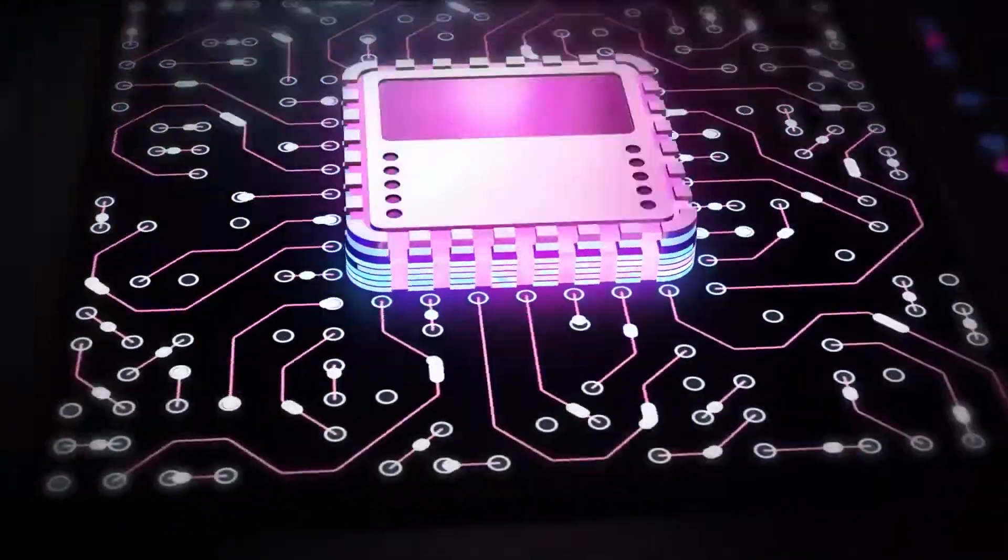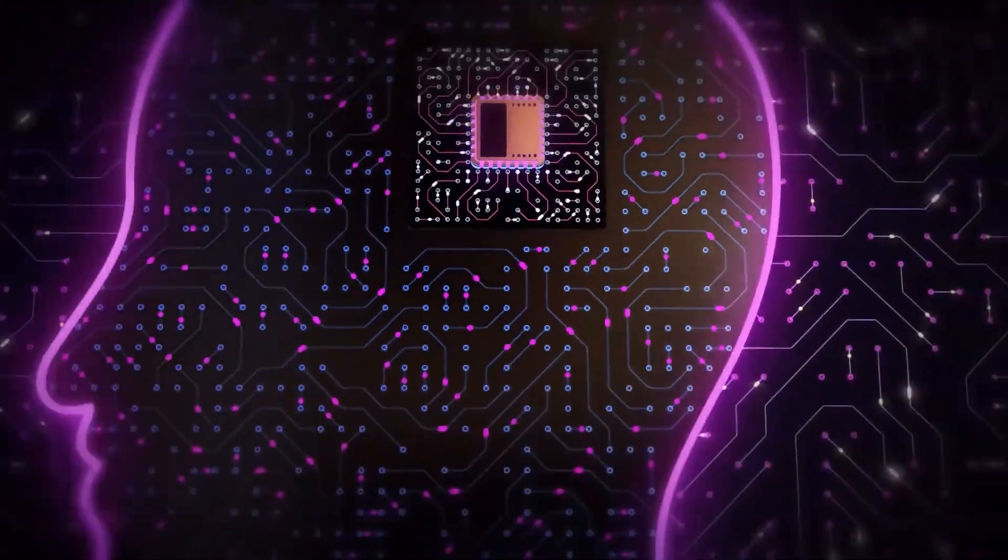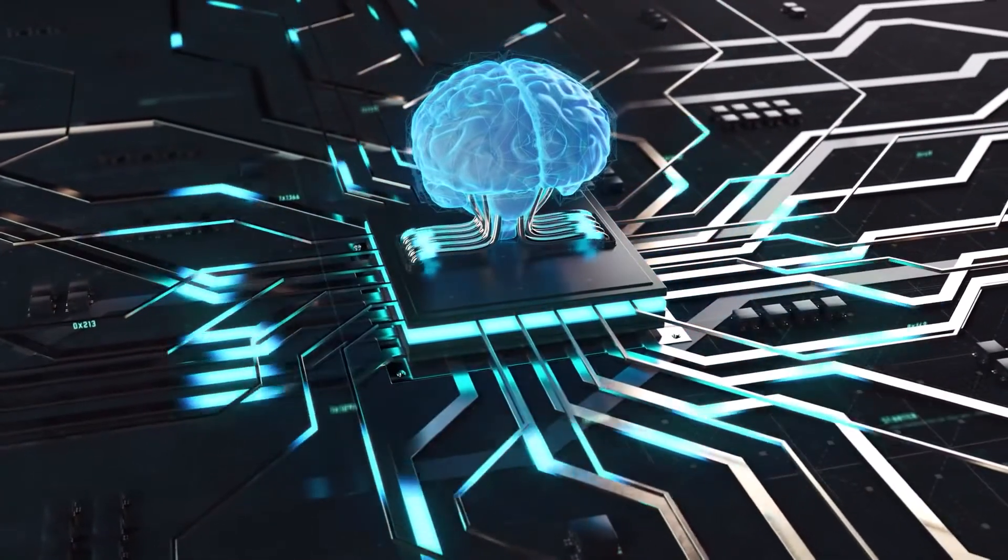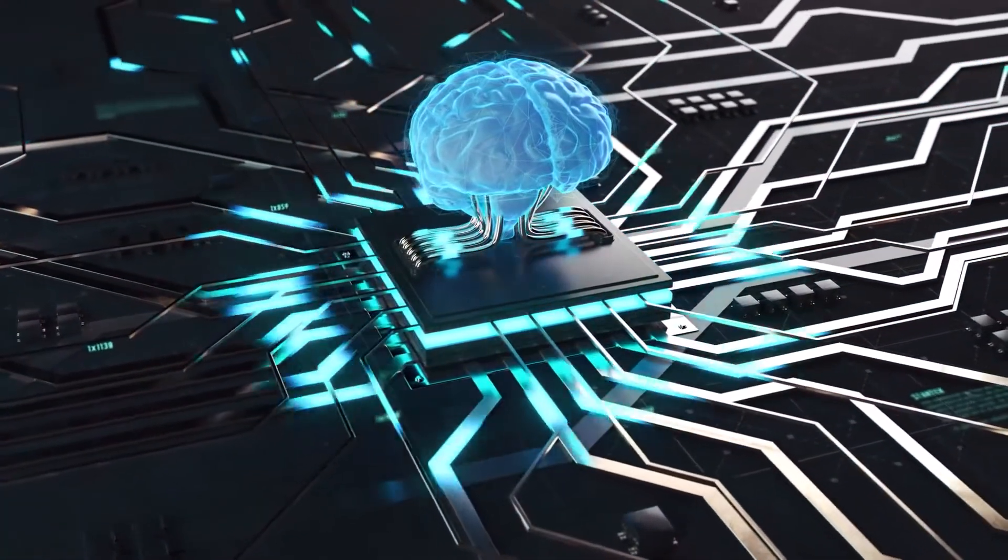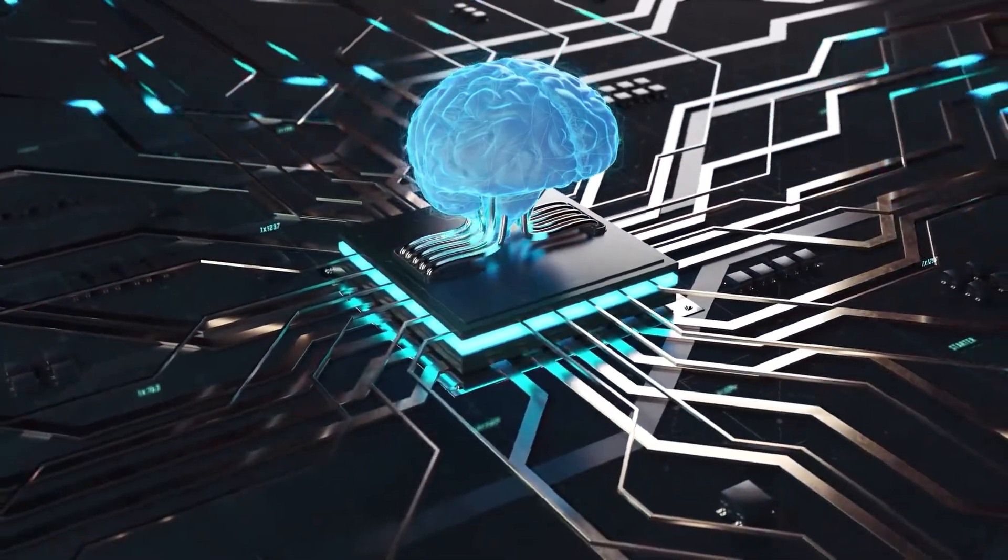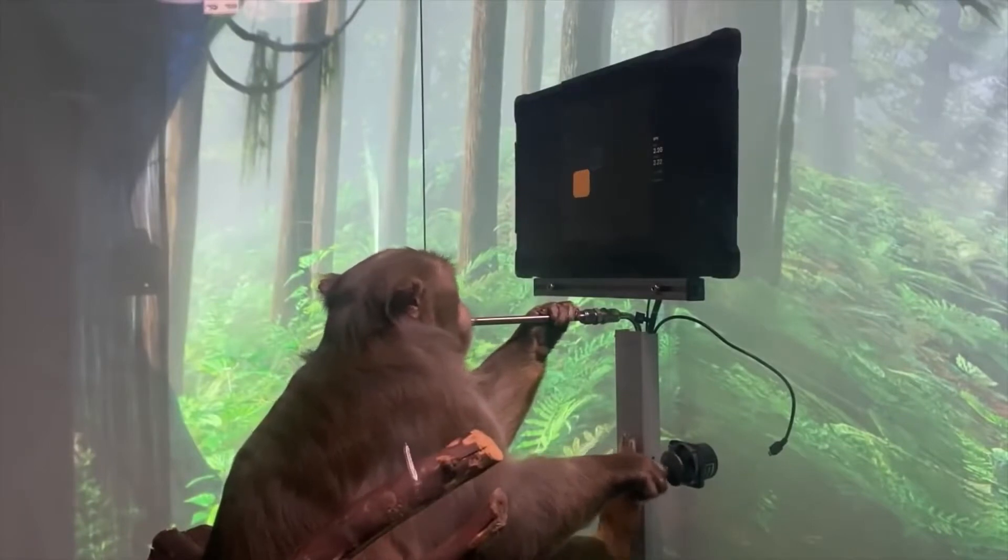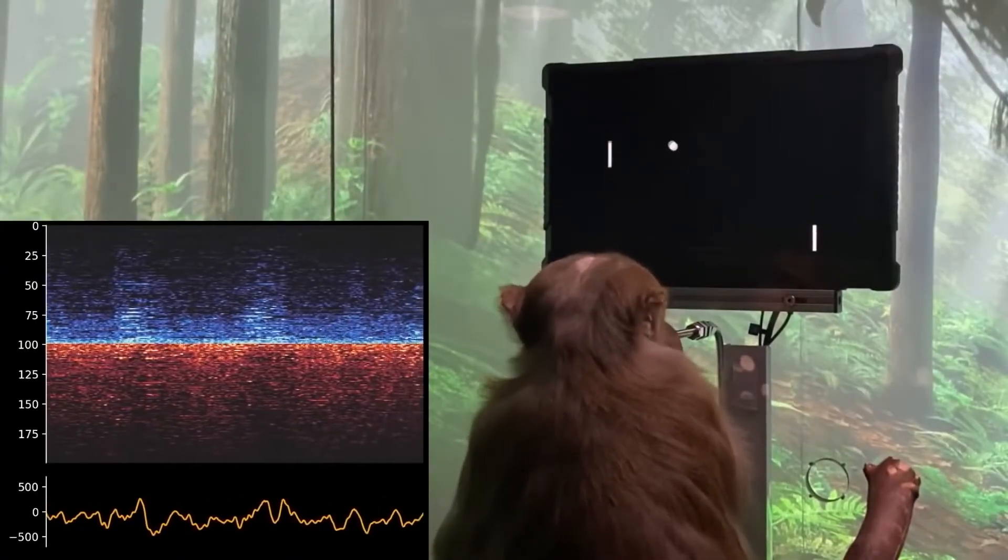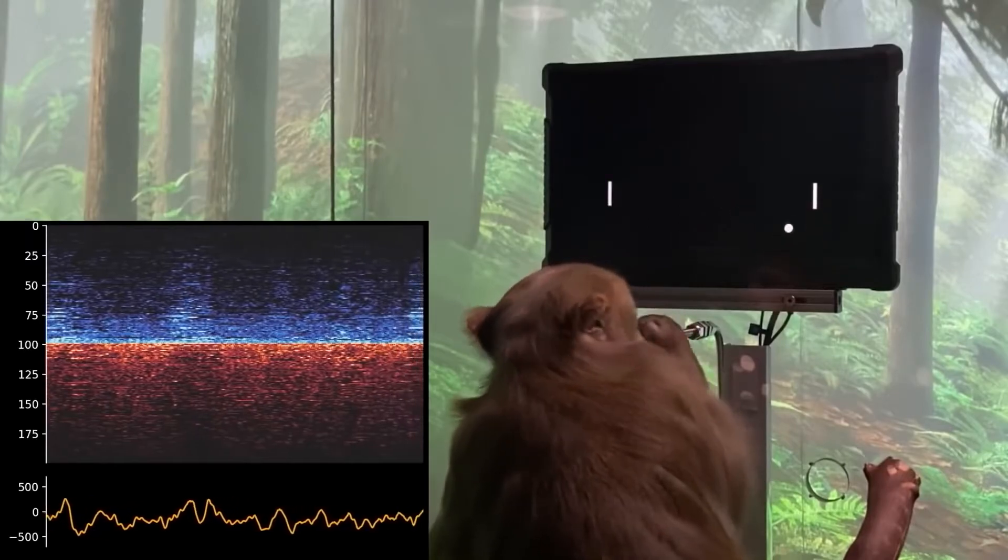According to the CEO of Neuralink Company, they would start implanting chips in human brains. Neuralink will develop with circuit technology. It involves the implantation of tiny electrodes in the human brain to transmit information to the brain. In 2021, an experiment was done in which a Neuralink chip was implanted in a monkey and we have seen him playing video games. It means that the chip is working fine in monkeys and now it is time to experiment with this chip on a human.